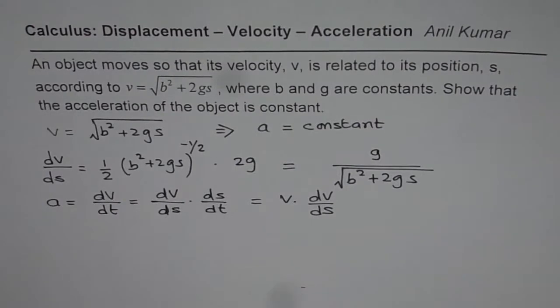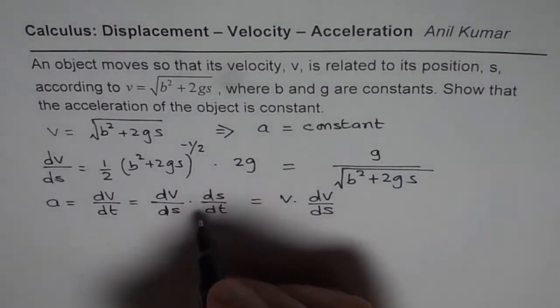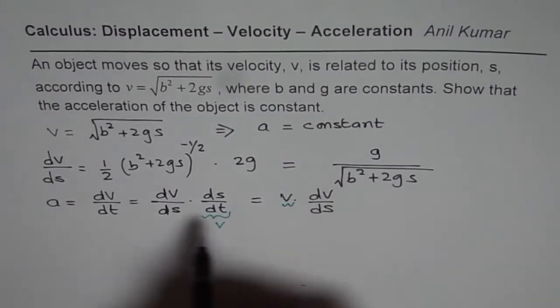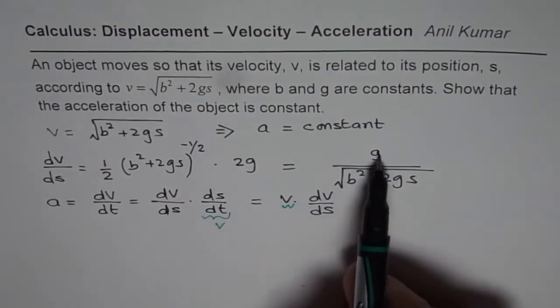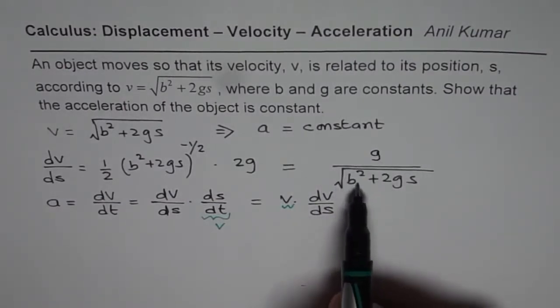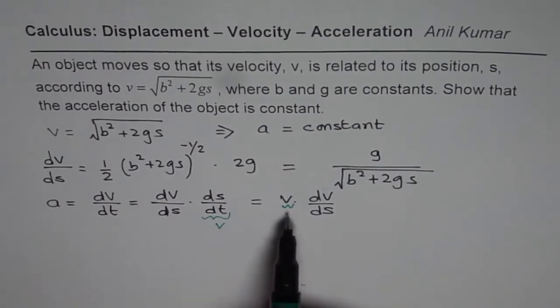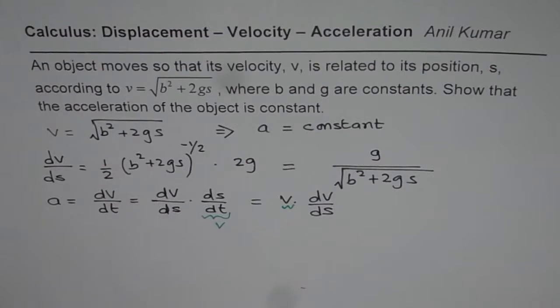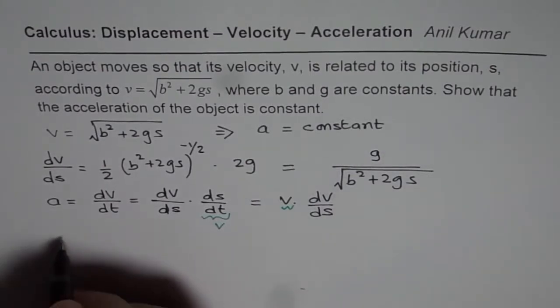So that is velocity for us. This part is velocity, so I wrote this velocity—do you see that?—and dv/ds. We know what rate of change of velocity is with respect to displacement: it is g/√(b² + 2gs). And velocity is already given to us as √(b² + 2gs). Let us now substitute and find what a is.